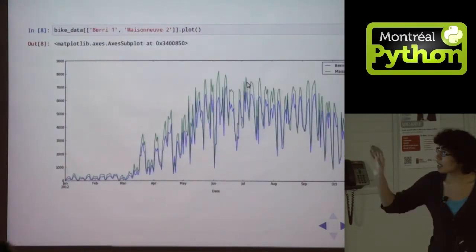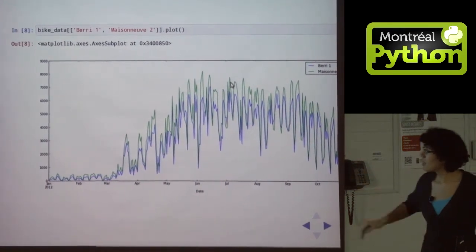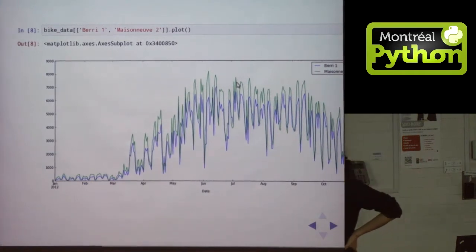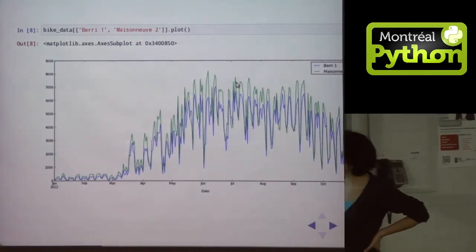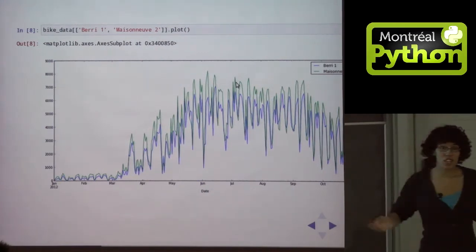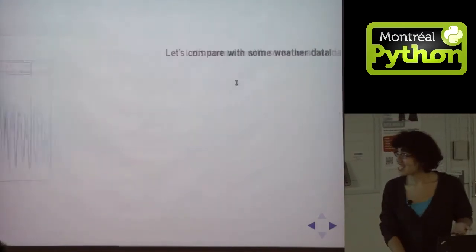I can also take a slice of this data frame by column, and look at just two columns. So we can see that these two columns are really highly correlated, right? Like every time one goes up, the other one goes up. And I wanted to figure out why this is. So I decided to look at some weather data.